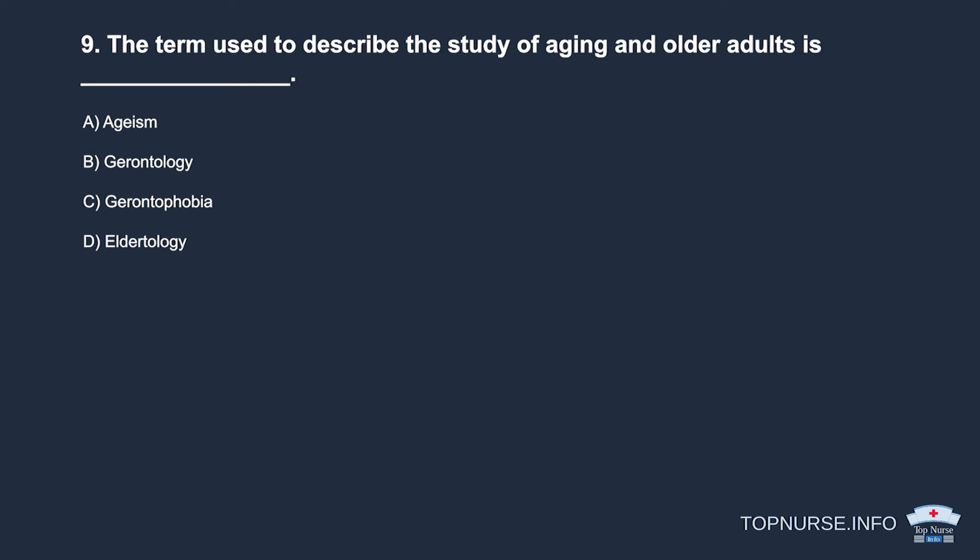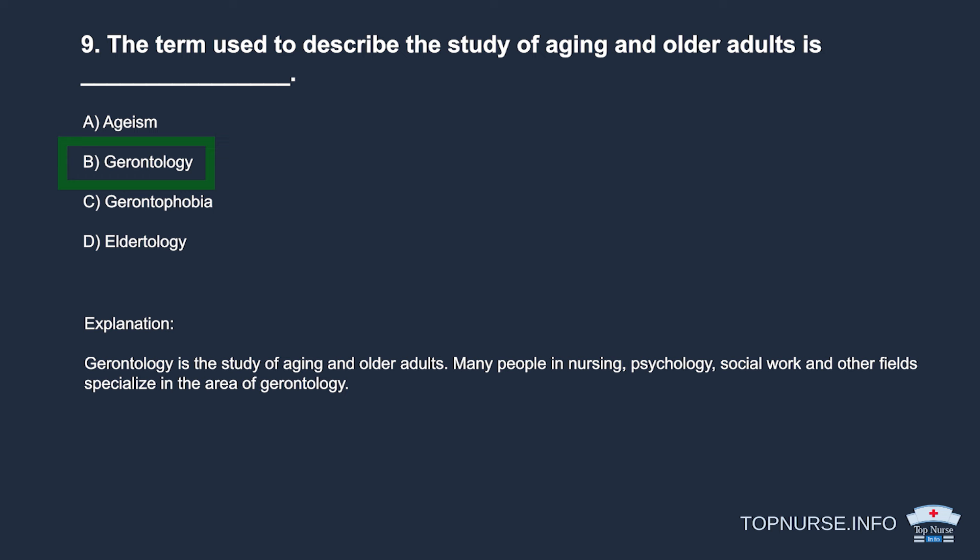Question 9: The term used to describe the study of aging and older adults is: a. Ageism. b. Gerontology. c. Gerontophobia. d. Eldertology. Correct answer: b. Gerontology. Gerontology is the study of aging and older adults. Many people in nursing, psychology, social work, and other fields specialize in gerontology.